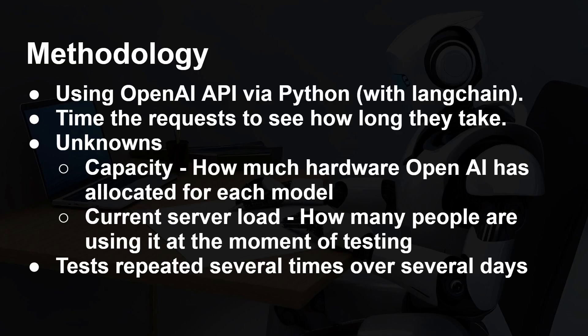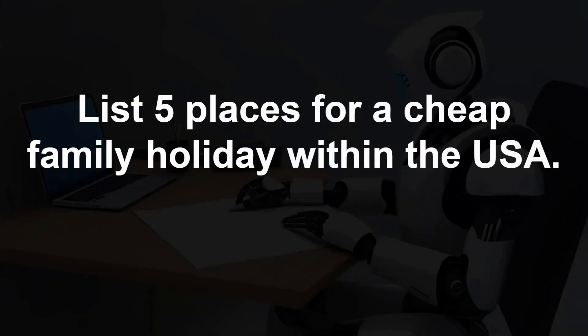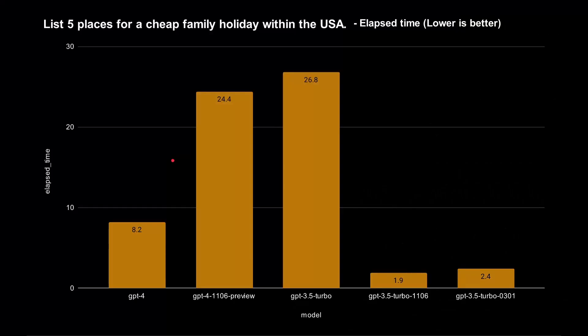The picture is pretty consistent. The first question I asked is: list five places for a cheap family holiday within the USA — a question you could easily ask ChatGPT via the web interface, or via the Python interface. We've got five different models listed: three GPT 3.5 Turbo models and two GPT 4 models. This chart shows the absolute elapsed time in seconds to receive the reply.